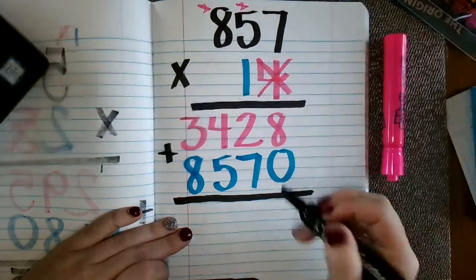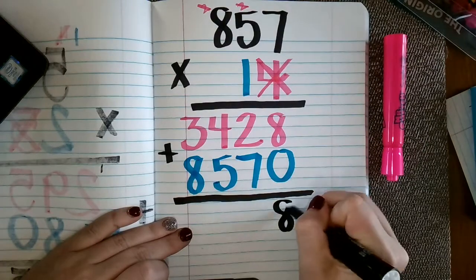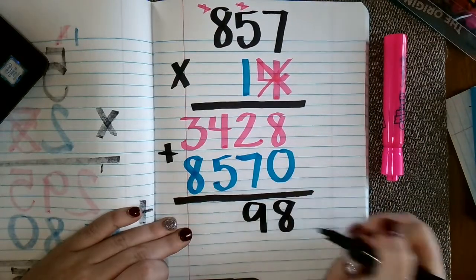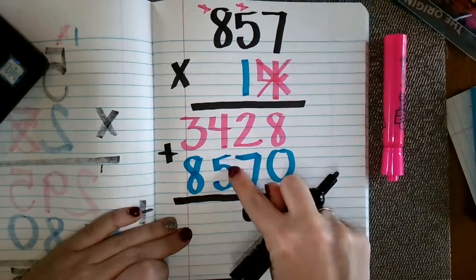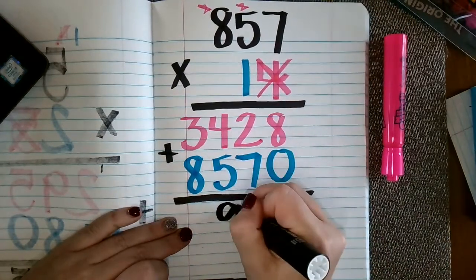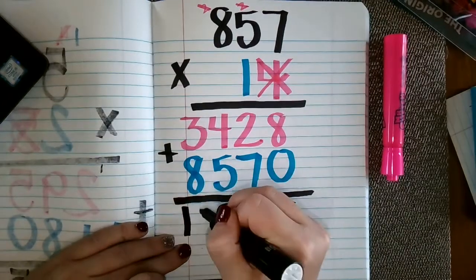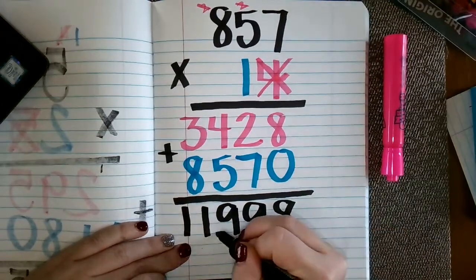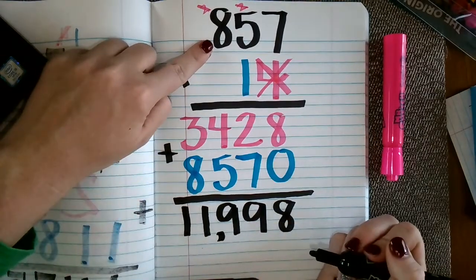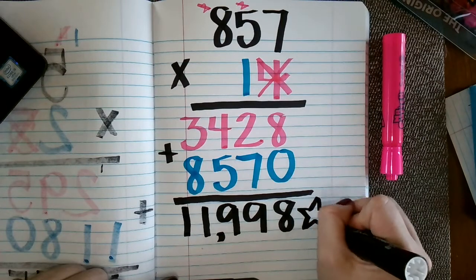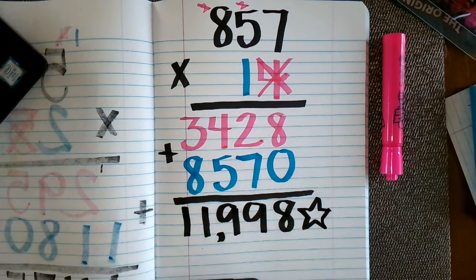So eight plus zero is eight. Two plus seven, nine. Four plus five equals nine. And three plus eight equals 11. So we have that 857 times 14 equals 11,998.